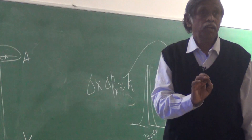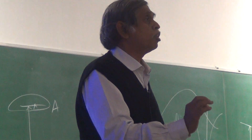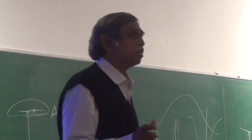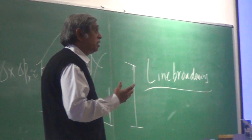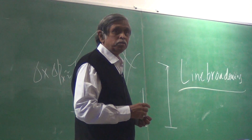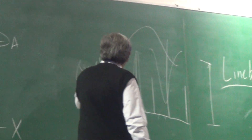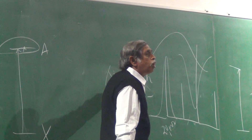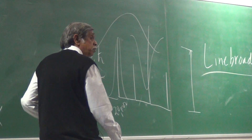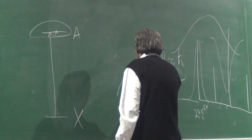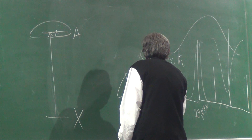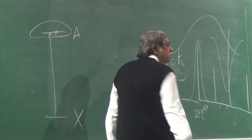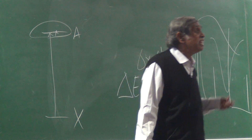If I am very precise in the determination of my position, I have no business talking about momentum, and vice versa. There are many such conjugate pairs — for example, total angular momentum and one component. But for us today, we are going to be looking at a conjugate variable pair: ΔE times Δt — the uncertainty in the energy and the uncertainty in the time.